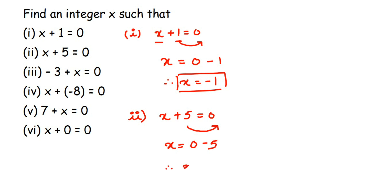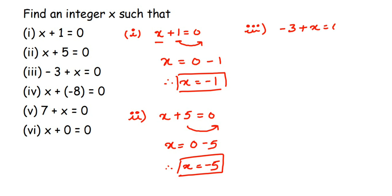The next equation is minus 3 plus x is equal to 0. I want the x value, so I'm going to transpose minus 3 to the other side. The sign is negative, so when transposed it becomes positive. Therefore, x equals 0 plus 3, so x is equal to 3.